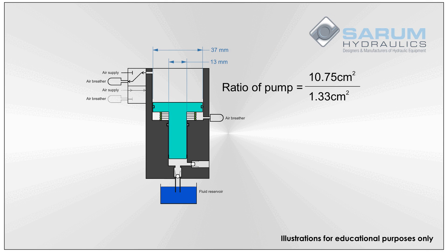This results in our example pump having a ratio of around 8 to 1. This means if you were to feed in 5 bar of air pressure on the top, you would get 40 bar of hydraulic pressure on the bottom.